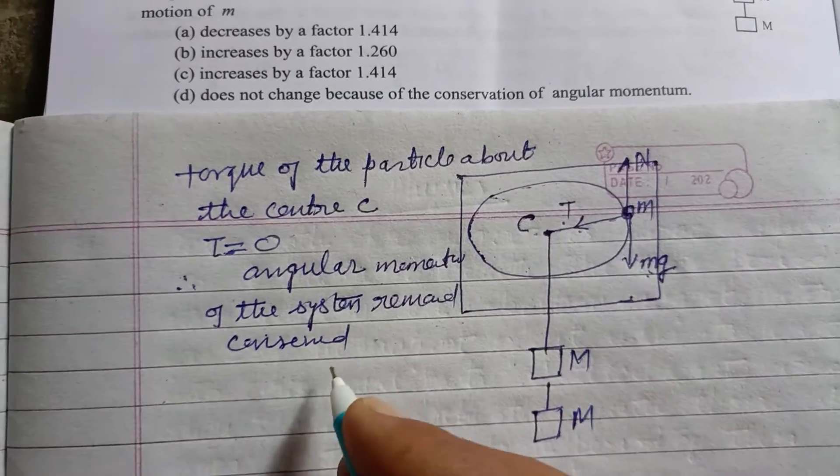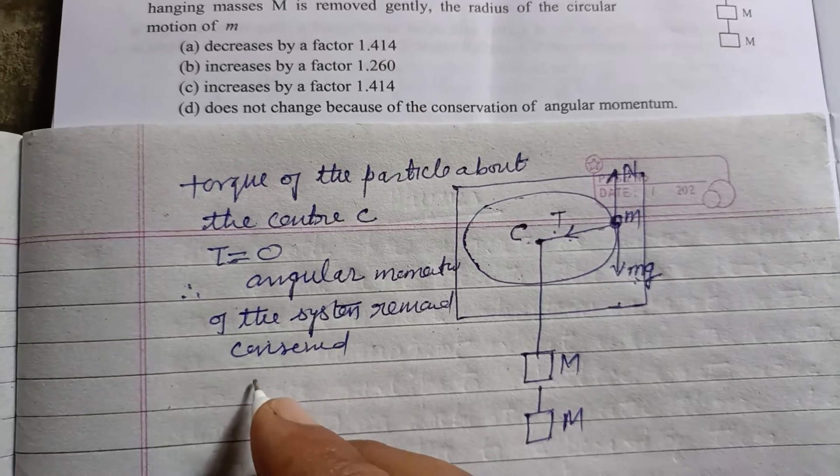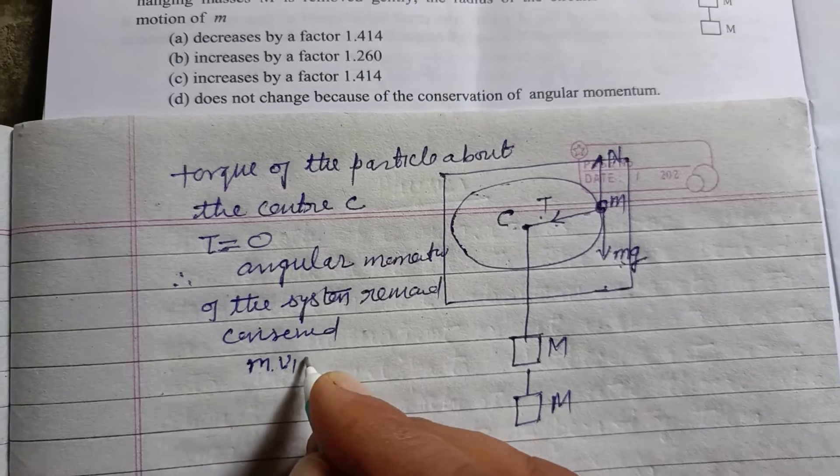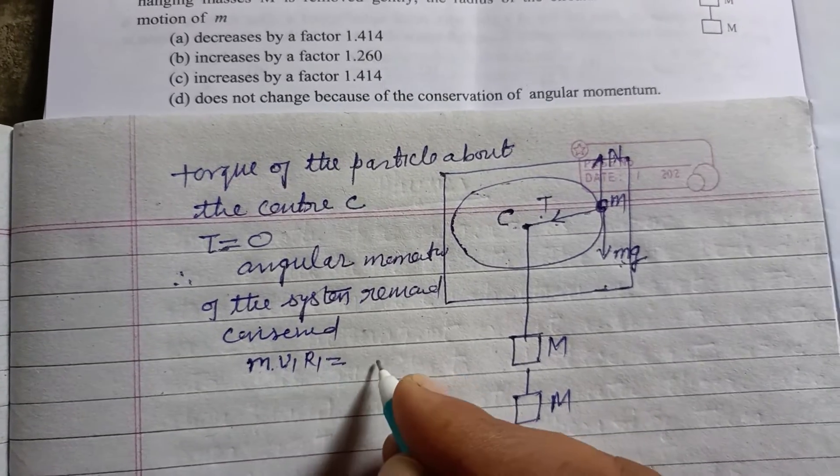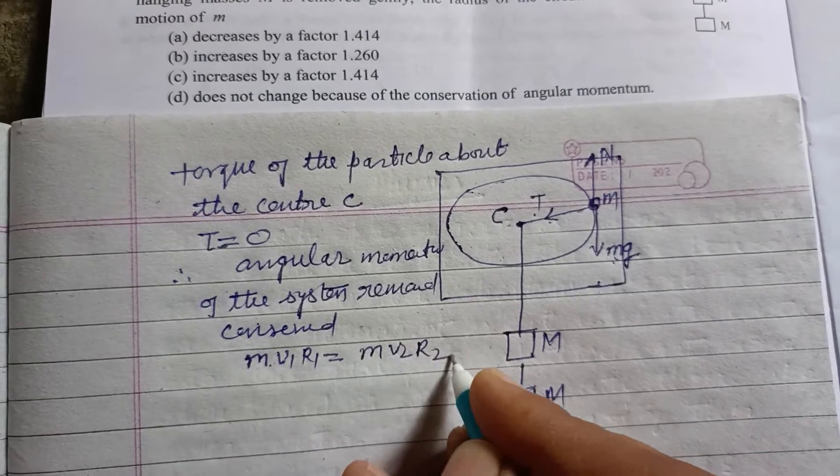So the angular momentum of the system remains conserved. Therefore, when the radius is changed, initial mass is M, velocity is V1 and radius is R1. M, V2, R2.